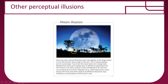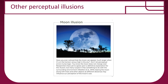The moon illusion: the moon looks much larger when it's low on the horizon than when it's high in the sky. The moon isn't changing size — when it's low, you can compare it to objects on the ground and judge it as large, but when it's high in the sky there's nothing to compare it to, so it seems smaller.